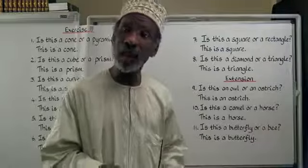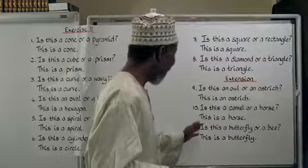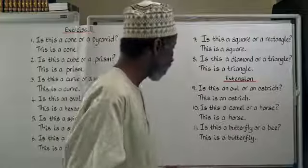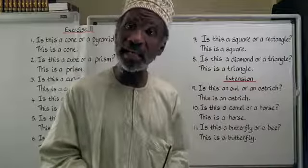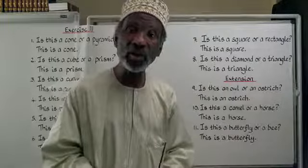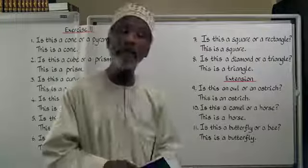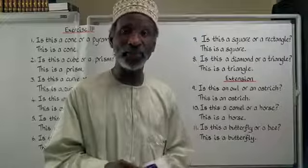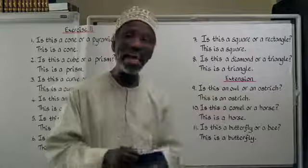Number 11: is this a butterfly or a bee? Butterfly is فَرَاشَةٌ and bee is نَحْلَةٌ. هَلْ هَذِهِ فَرَاشَةٌ أَمْ نَحْلَةٌ. This is a butterfly — هَذِهِ فَرَاشَةٌ. That is the end of exercise 11 plus the extension.